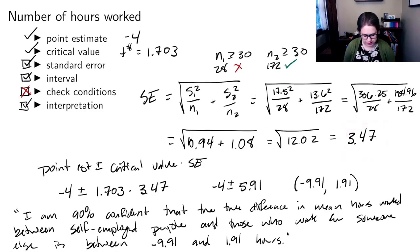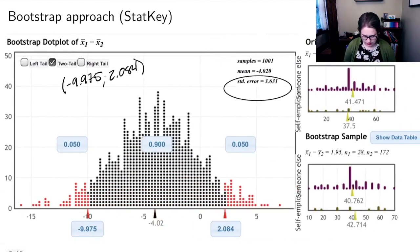They're a little different, which might be because this condition is not met. That's the bootstrap approach, but you would come to a similar conclusion because 0 is in that interval as well. So those are two ways to make a confidence interval for a difference in means.